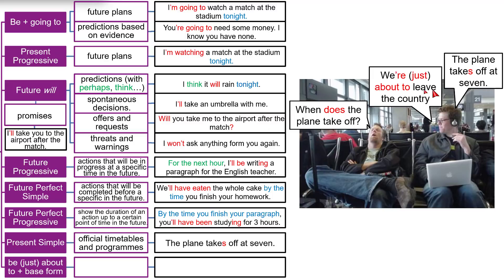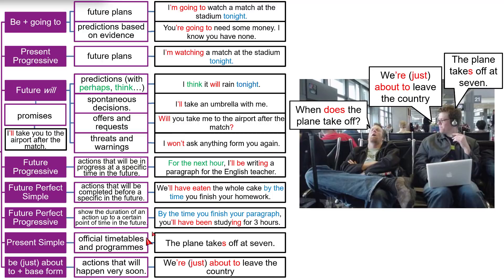"We are just about to leave the country." This means it won't be long before we get on board. Use 'be about to' — you can say "we're about to leave the country." The word 'just' means it's very, very soon. You can use it with or without 'just'. This expresses actions that will happen very soon.